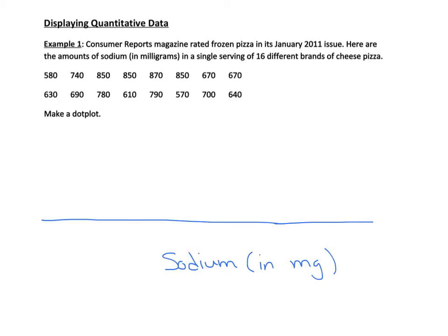So I'm going to start slightly lower than my lowest number. My lowest number is 570, so I'm going to start below that, and I'm going to end above my highest number, which is 870. Probably going from 550 to 900 would be a good way to do it. From there, you can go by 50s, you can go by 25s, or even start at 500 and go by 100s. Just make sure that you get a good scale that includes all values. I'm going to start at 550 and go by 50s.